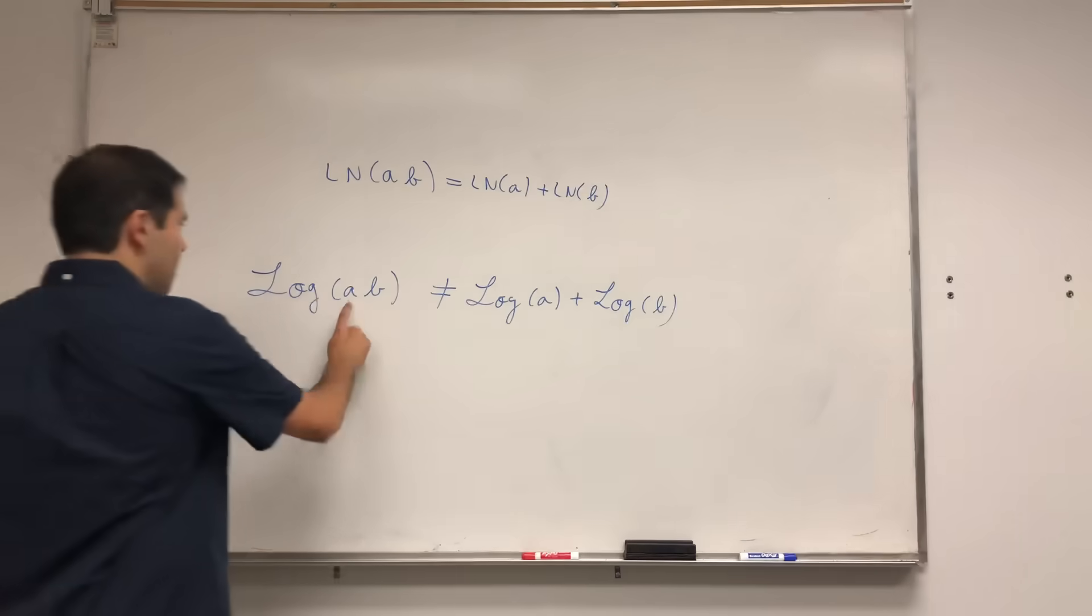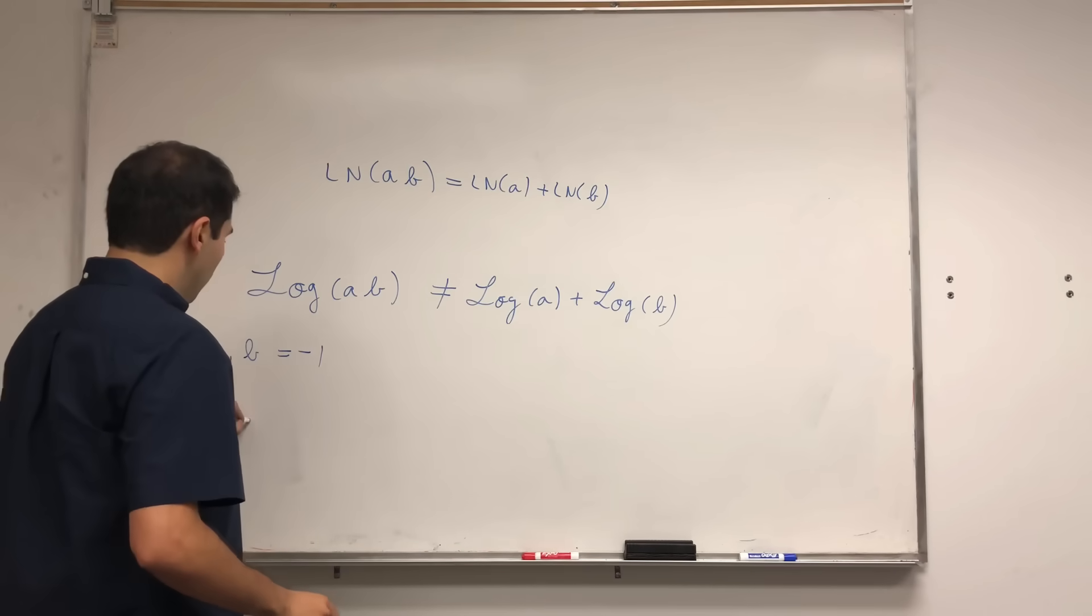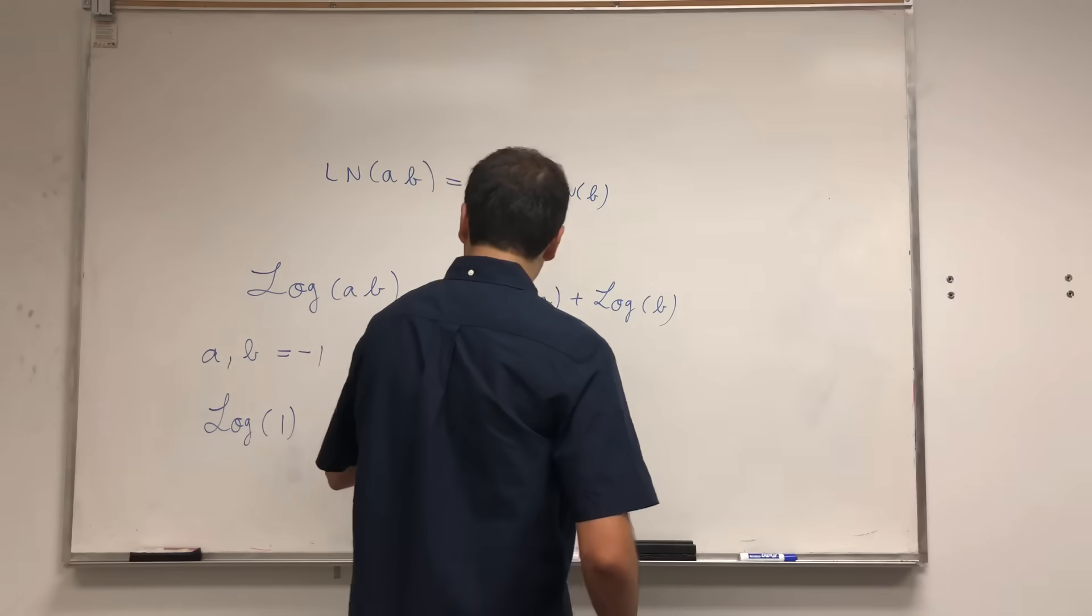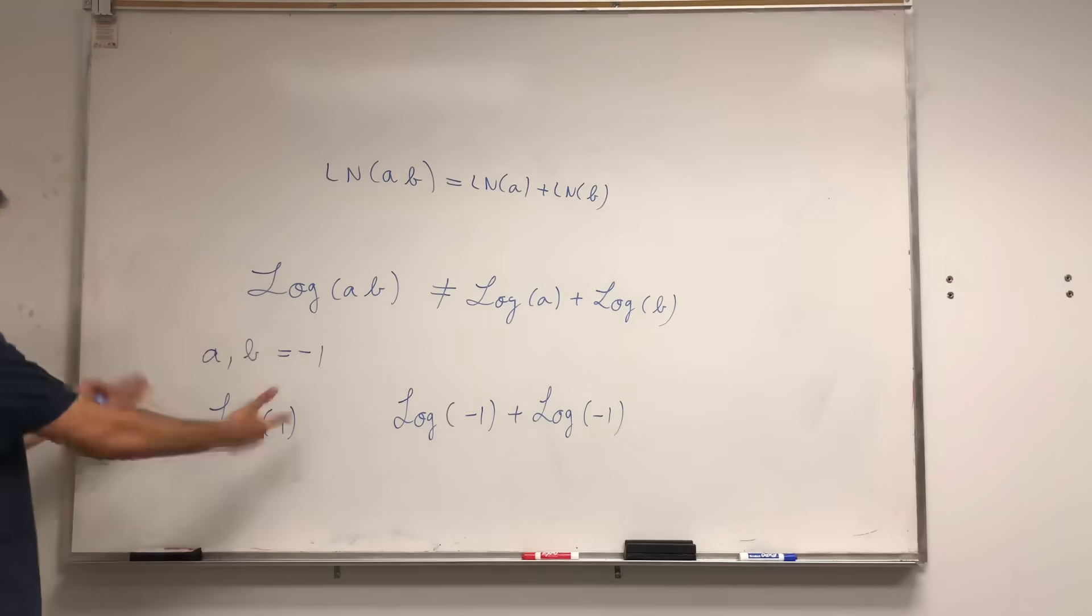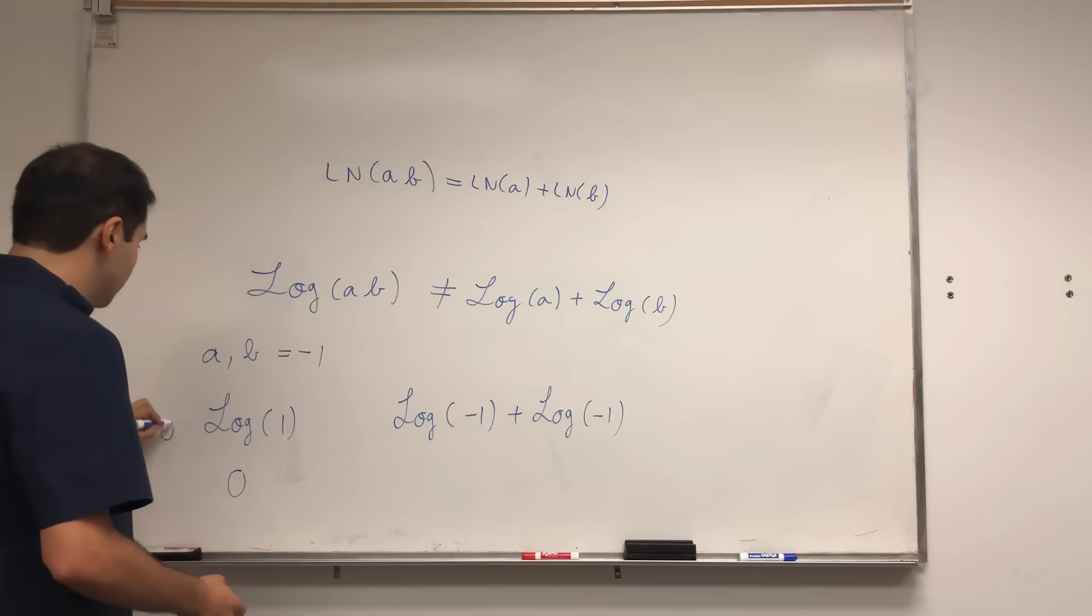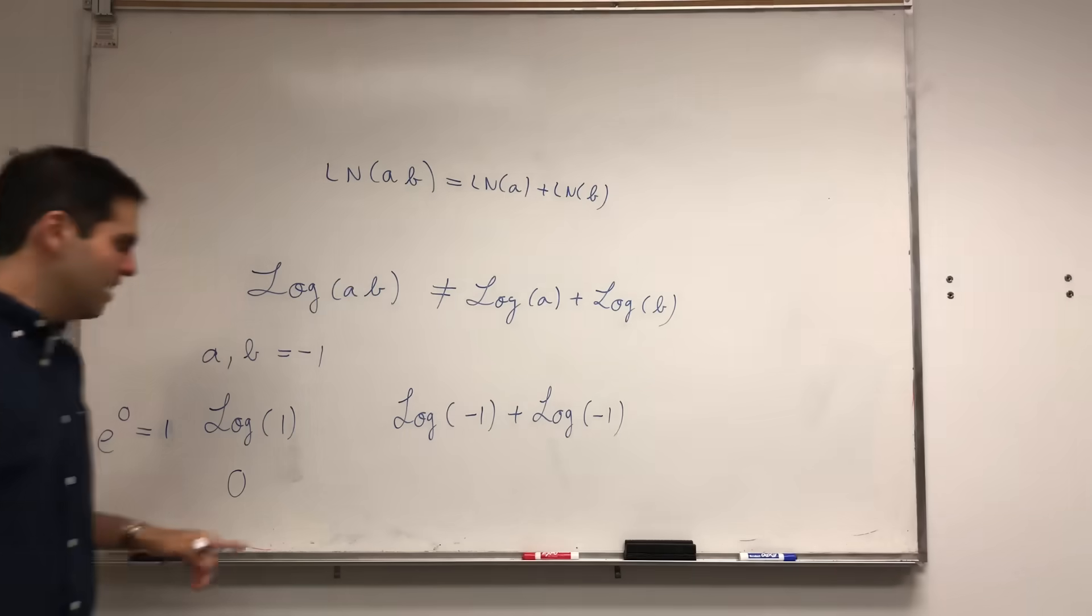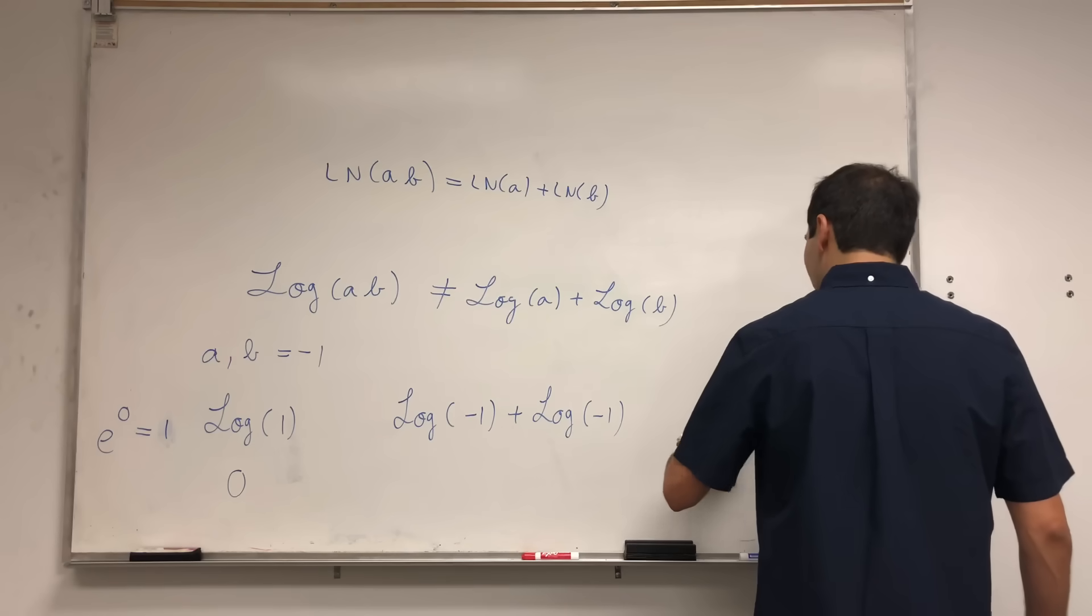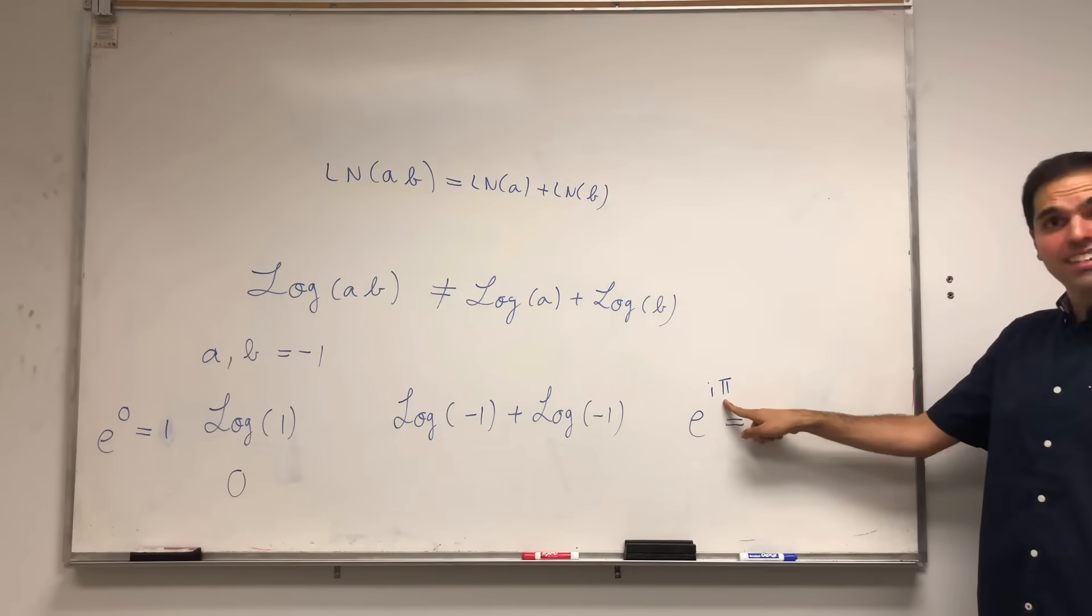And let me give you an example. Let's take A and B to be minus 1. Then, on the one hand, you have log of A, log of 1. And on the other hand, you have log of minus 1 plus log of minus 1. Well, the principal log of 1, that's 0, because e to the what equals to 1? e to the 0 equals to 1. And the argument of 0 is between 0 and 2π. On the other hand, what is principal log of minus 1? Well, e to the what is minus 1? Well, e to the iπ is minus 1. And this π is between 0 and 2π.